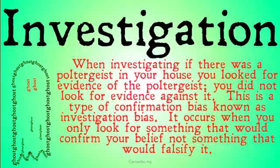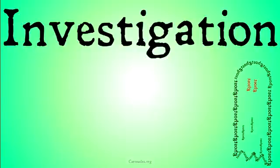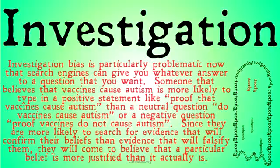When investigating if there was a poltergeist in your house, you looked for evidence of the poltergeist — you did not look for evidence against it. This is a type of confirmation bias known as investigation bias. It occurs when you only look for something that would confirm your belief, not something that would falsify it.